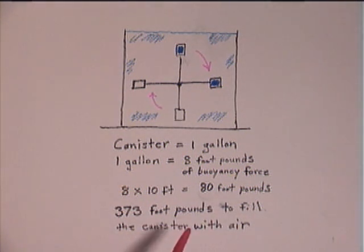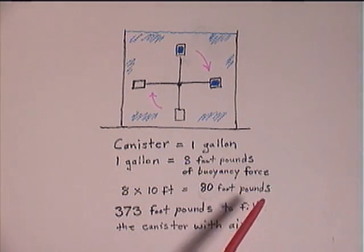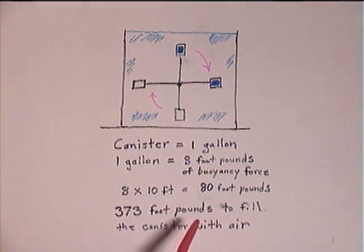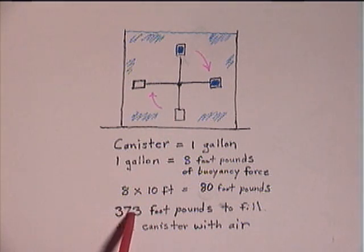So we have a serious problem here. Each canister is giving us only 80 foot-pounds of energy going up, but it takes 373 foot-pounds to fill the canister with air at the bottom position. The amount of energy needed to fill the canister with air is nowhere close to the amount of energy gained in the upward rotation of the canister. So this approach fails as a perpetual motion machine.